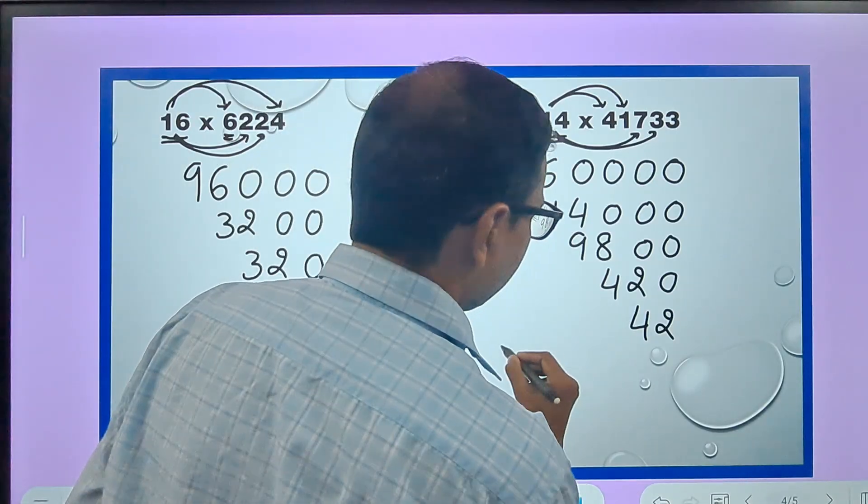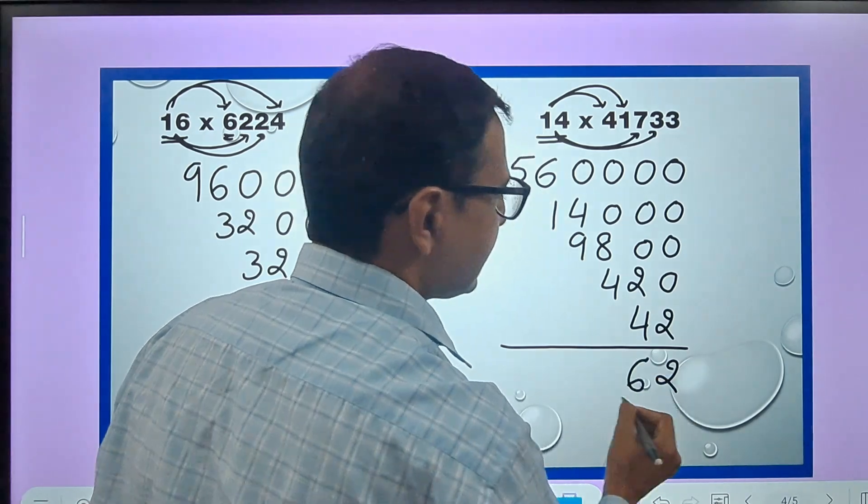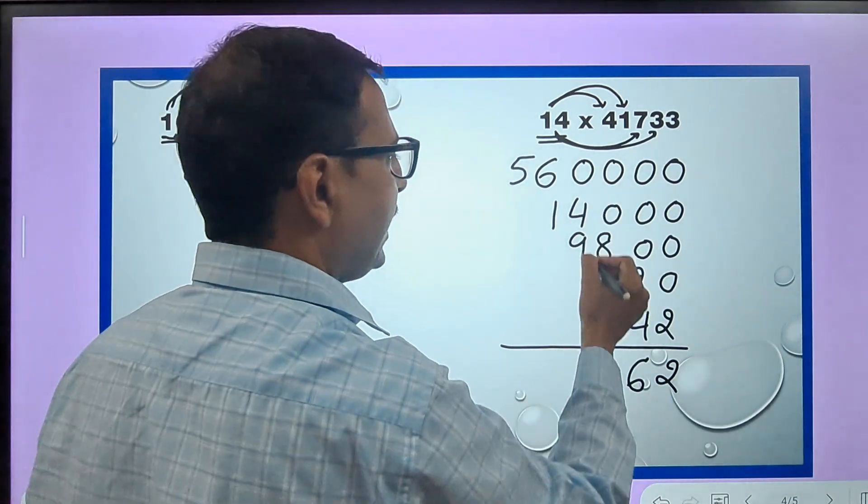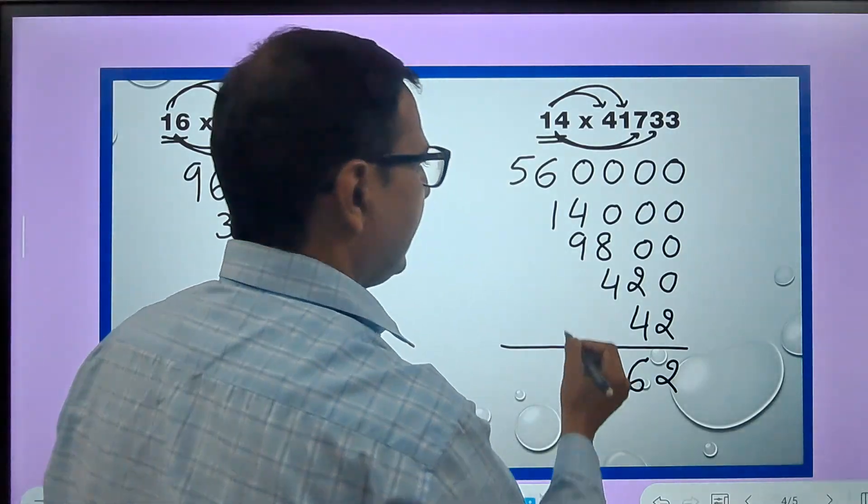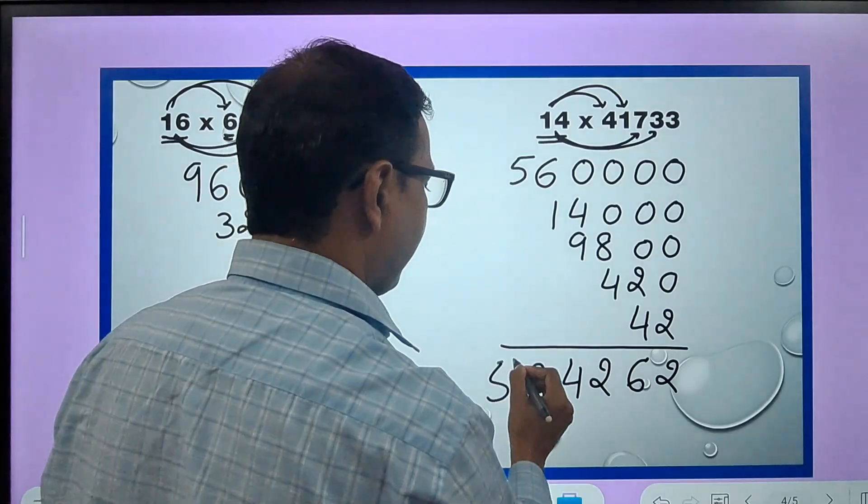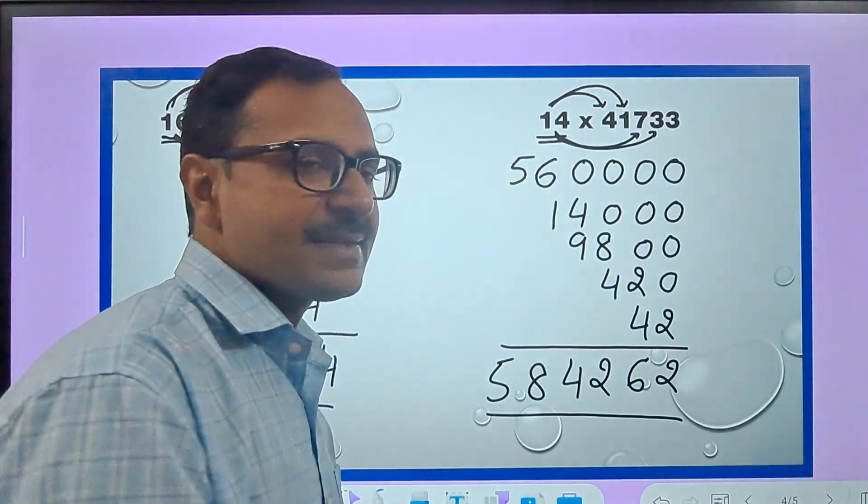So I got all my numbers, and now very easy. 2, this is 6, this is 12 - 12 means 2 and a 1 carry. 14, 14 means 4 and a 1 carry, so 8. And then 5, 5, 8, 4, 2, 6, 2 is the product.